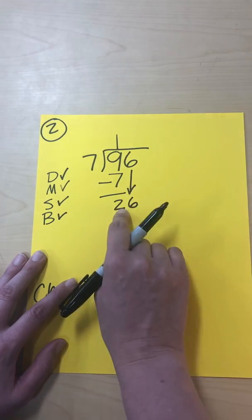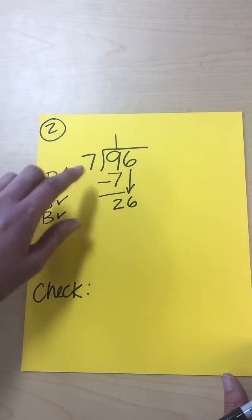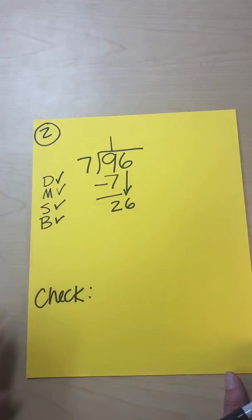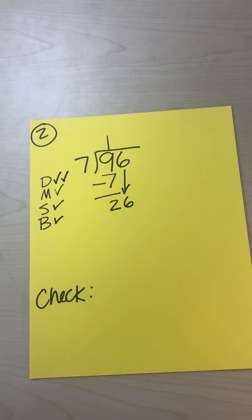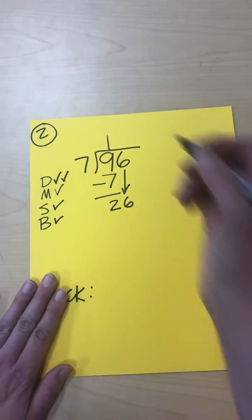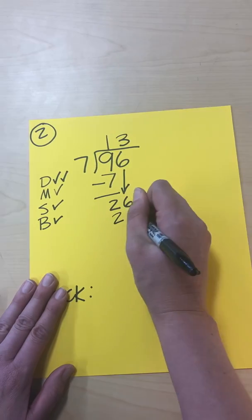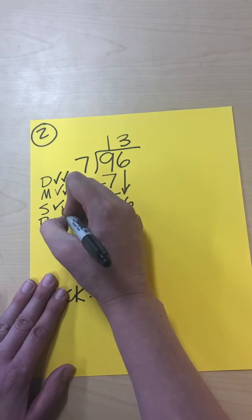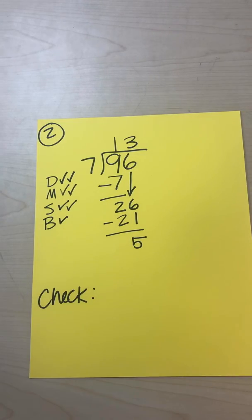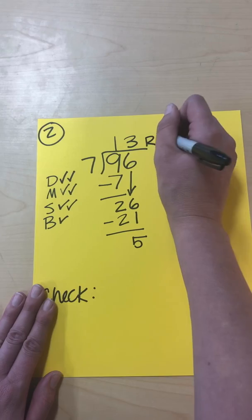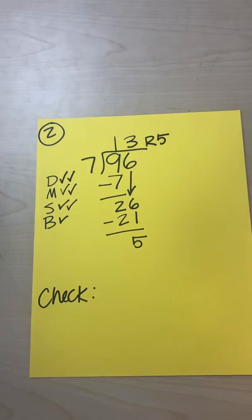Since we had two left over, we leave the two there and bring down the six — now it's 26. We decide how many times seven goes into 26. Seven times three is 21, which is close; seven times four is 28, which is too high. So we use three, write 3 above, multiply to get 21, and subtract: 26 minus 21 is 5. We have nothing else to bring down, so we have a remainder of 5. The answer is 13 remainder 5.